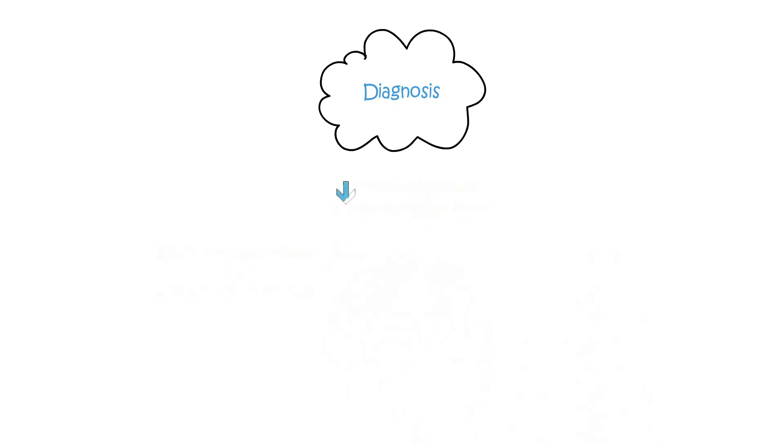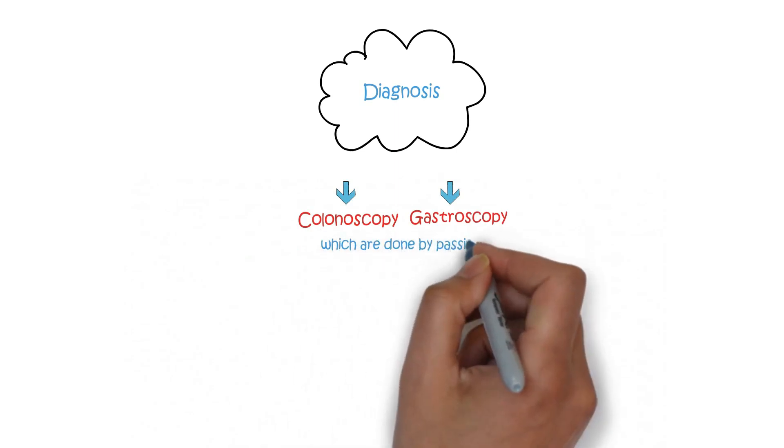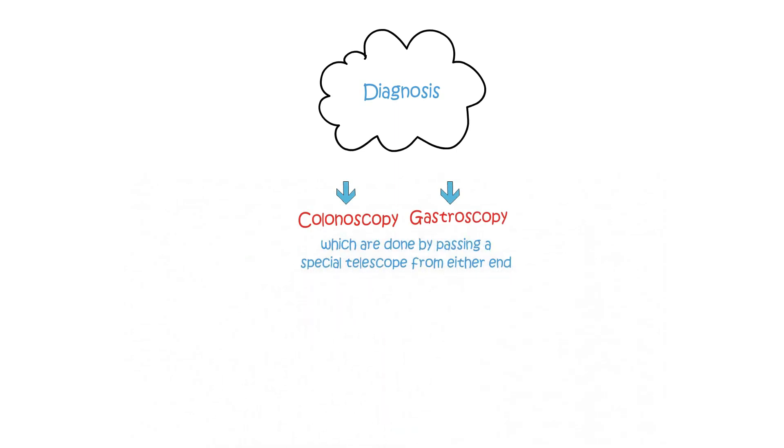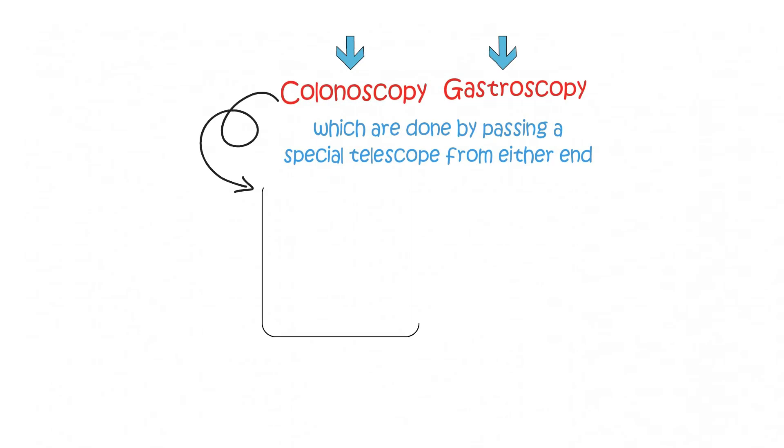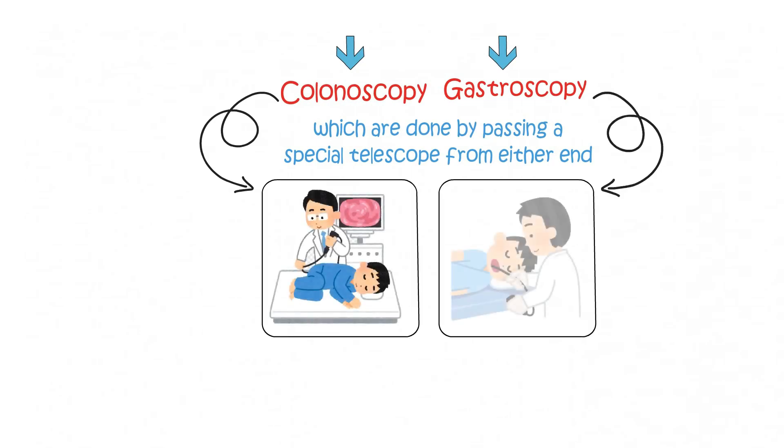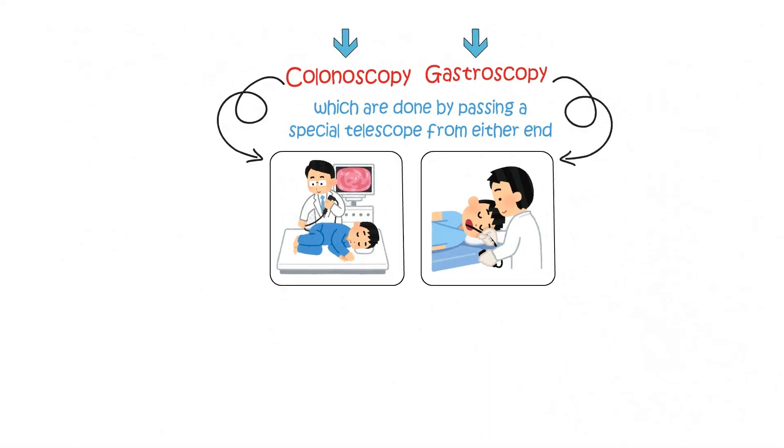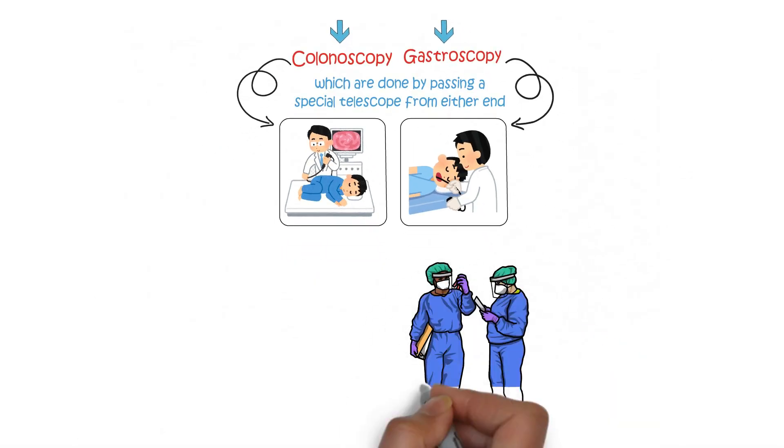These include camera tests called a colonoscopy or a gastroscopy which are done by passing a special telescope from either end. A colonoscopy is passed from the back side to look at the colon and gastroscopy passes from the mouth to look at the upper part of the gastrointestinal tract such as the stomach. Small samples known as biopsies are taken which are then looked at under a microscope to confirm the diagnosis.